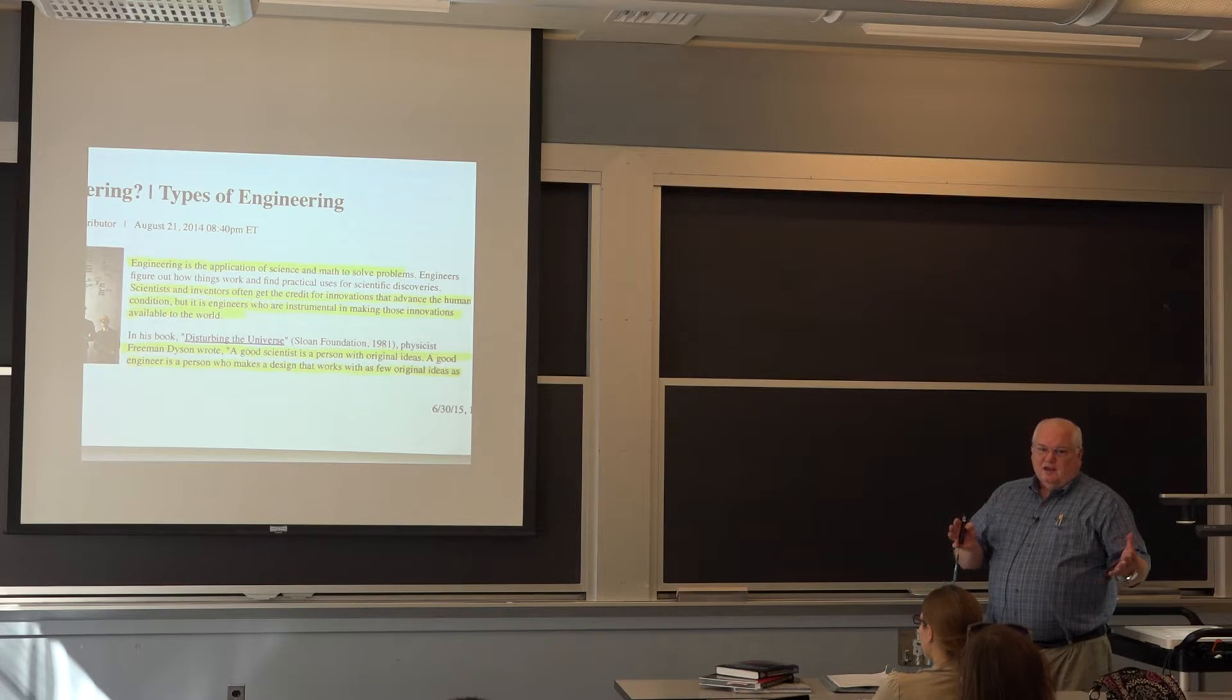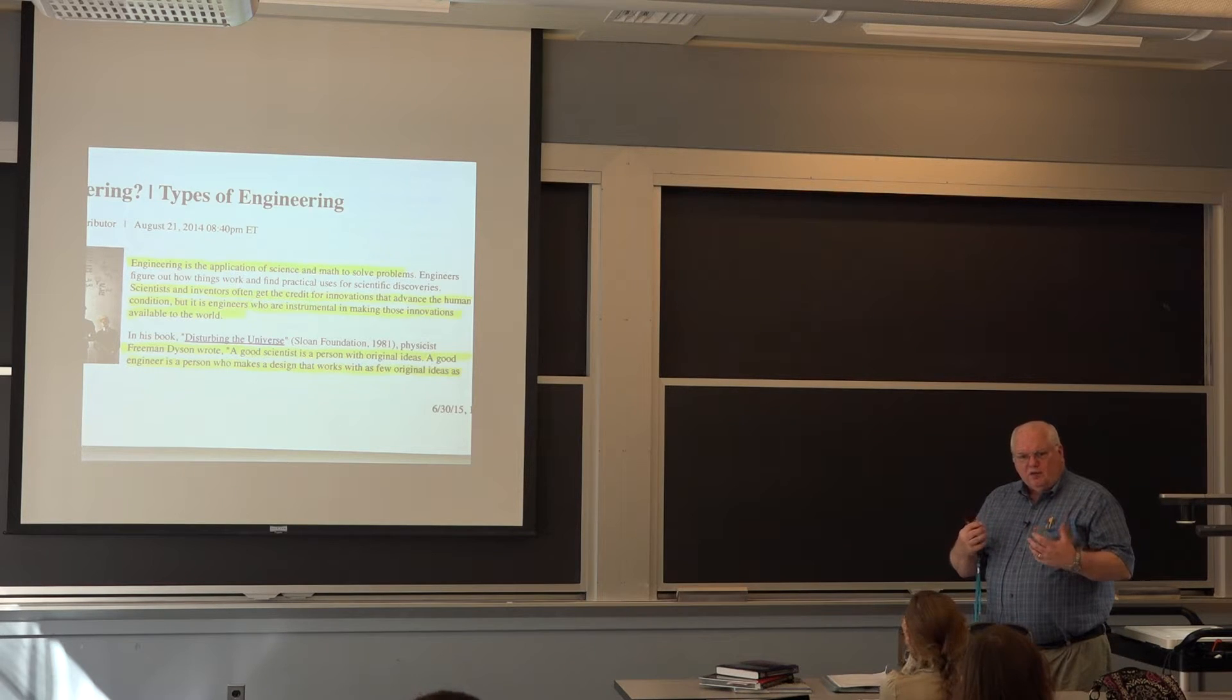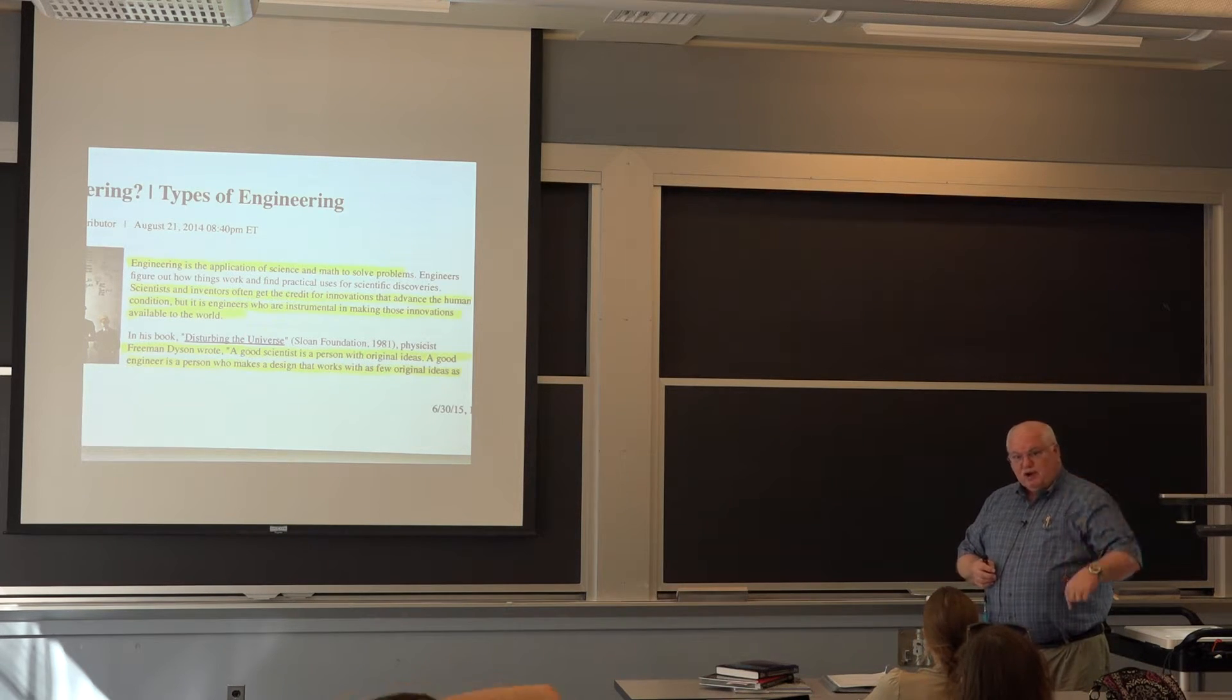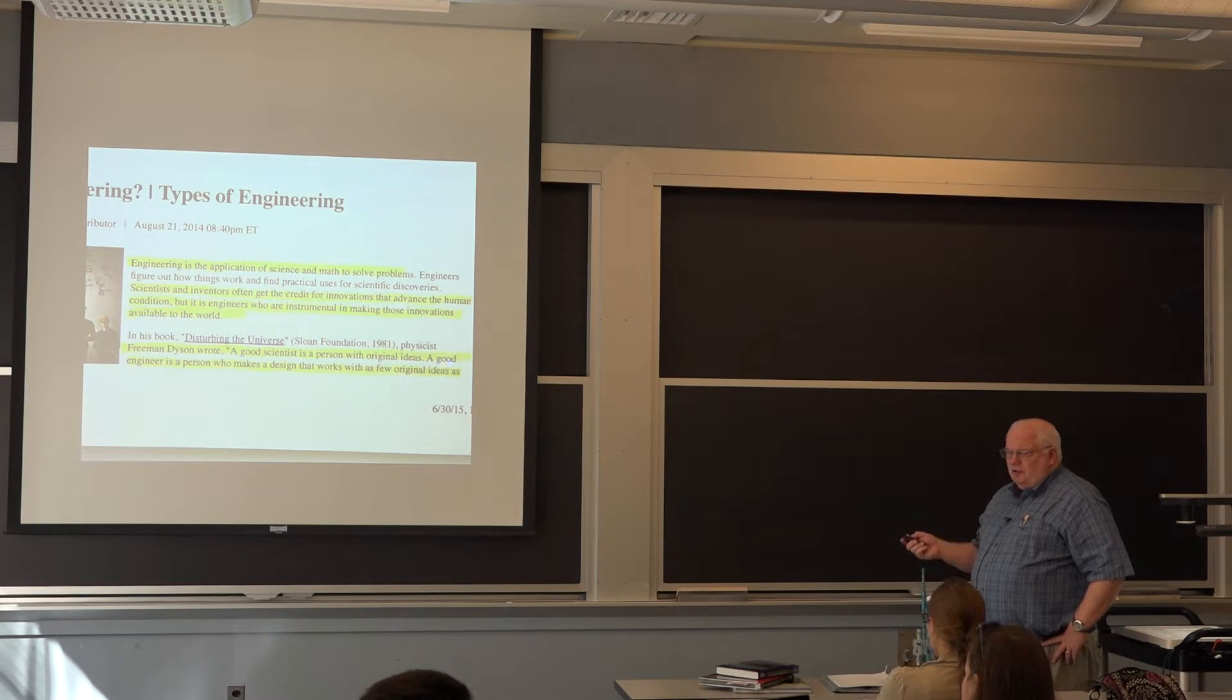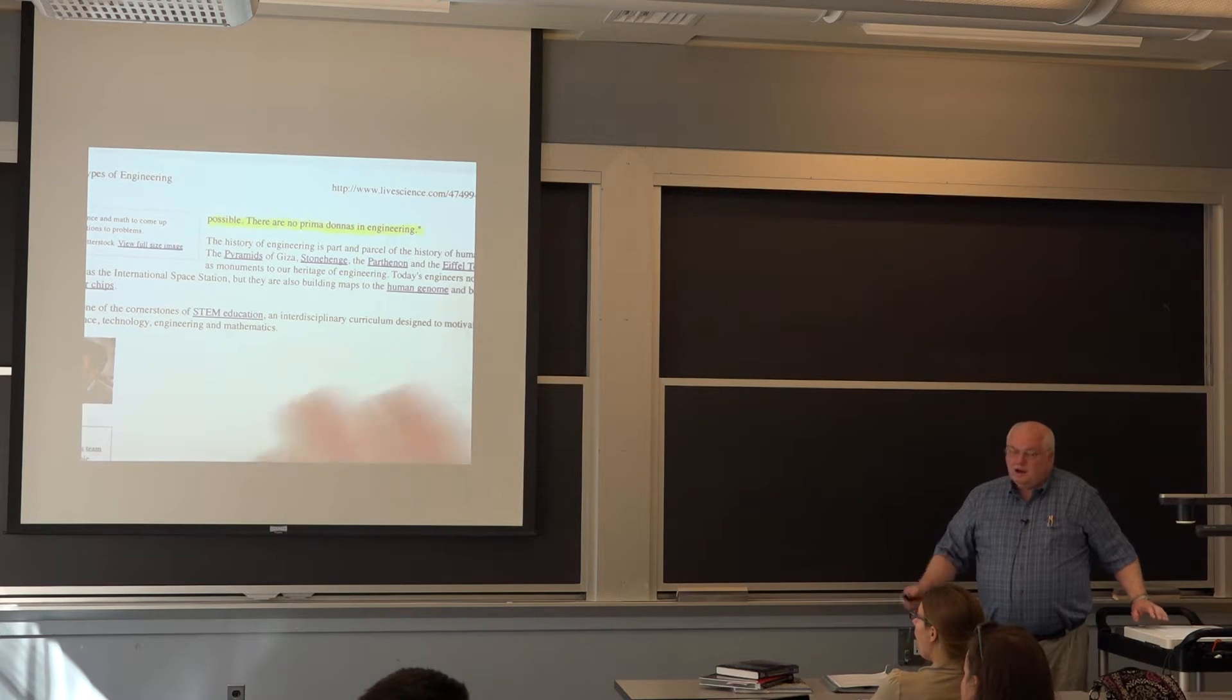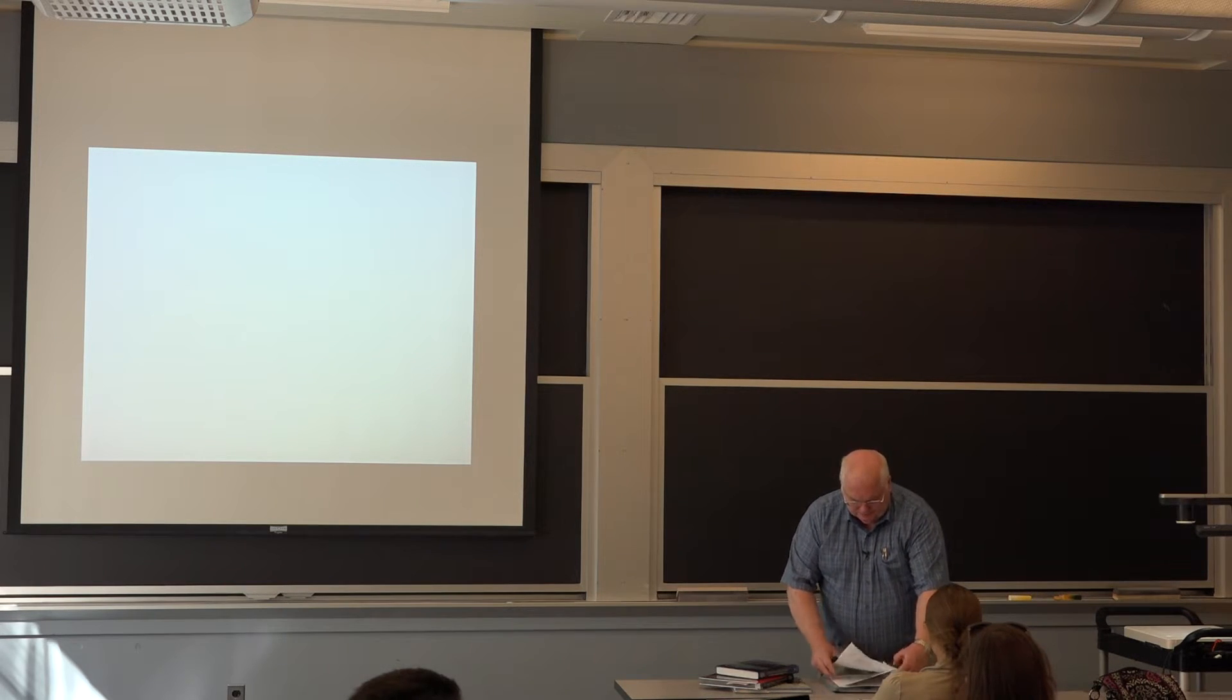Scientists and inventors often get the credit for innovations that advance the human condition. But it is engineers who are instrumental in making those innovations available to the world. Kind of what happened after World War II. Why did Gordon Brown go to engineering science? They wanted to get closer back to the roots of how we solved significant problems that we didn't know how to solve. Whether it was radar, fission for the Manhattan Project, or bomb sites. This is Draper Lab. They made bomb sites. Physicist Freeman Dyson wrote, a good scientist is a person with original ideas. A good engineer is a person who makes a design that works with as few original ideas as possible.